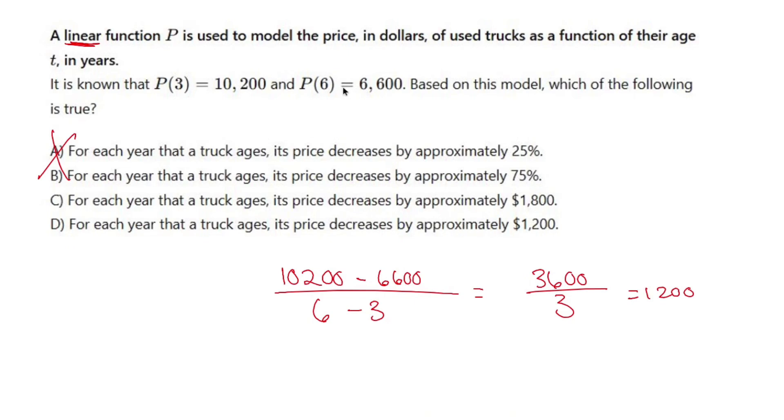All that divided by 3 is going to be $1,200. So what you're seeing is this goes down by $1,200 every year from year 3 to year 6.